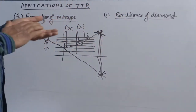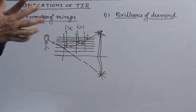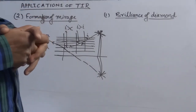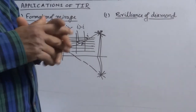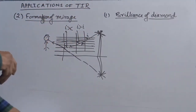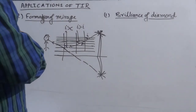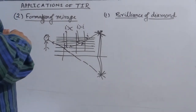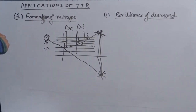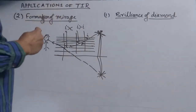Diamond is a hard crystal, and in its natural form it has no brilliance or shining effect. The true reason for its shining is total internal reflection.